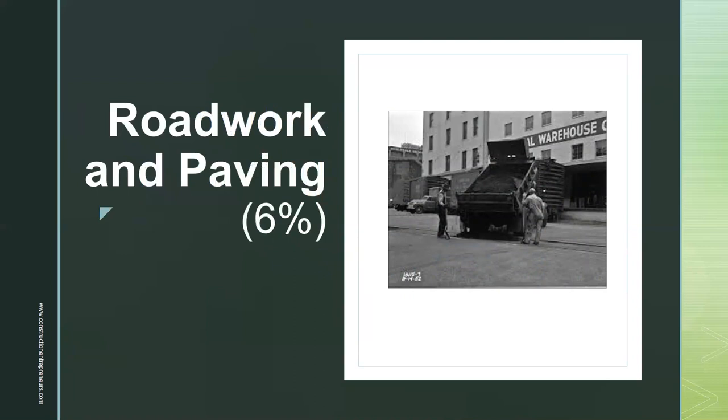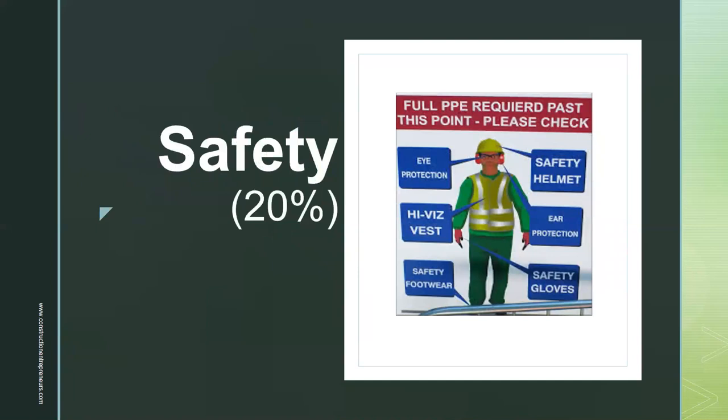Next is roadwork and paving at 6%, covering highways, roads, and parking lots. Finally, safety is the last section, coming in at 20%, covering personnel, transportation and traffic control, and environmental topics.